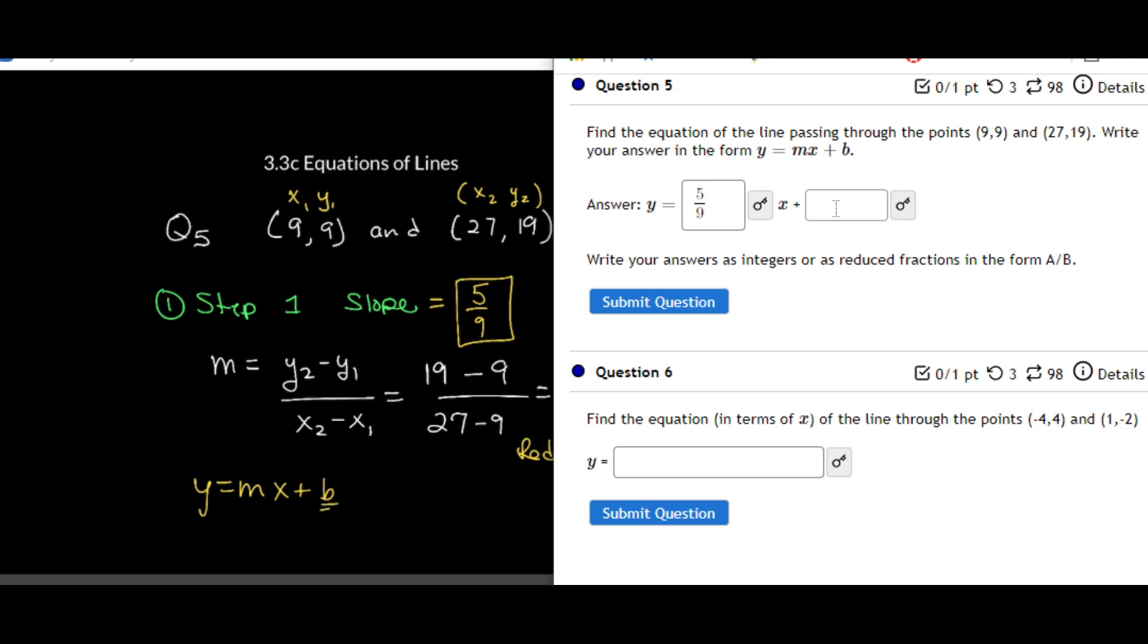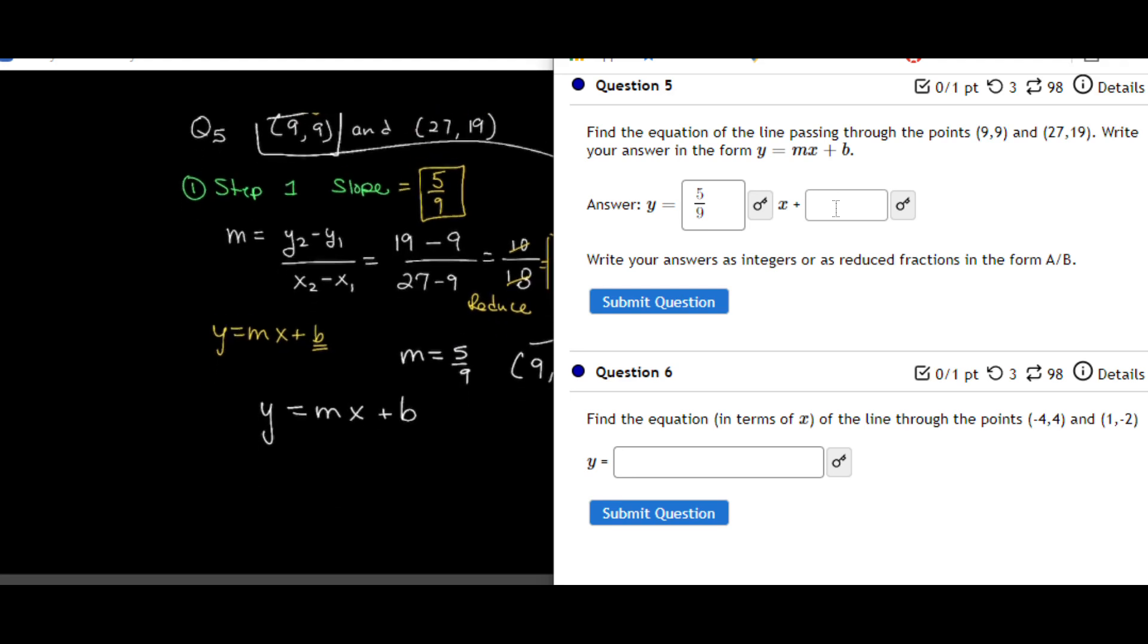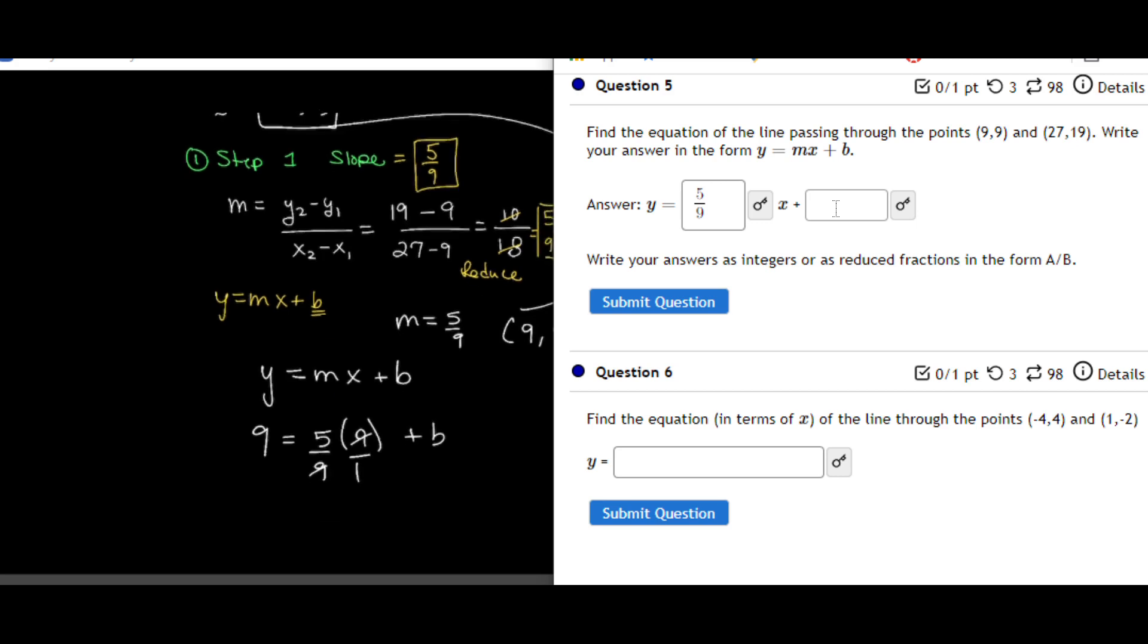That's the next piece that we're finding. We can do this two different ways. I do still like going from y is equal to mx plus b and plugging in one of those points. So we already said that m was equal to 5 over 9. If I use the first of those two points, that's 9, 9, I can now plug in y is 9, m is 5 over 9, x is 9 plus b.